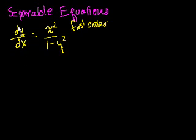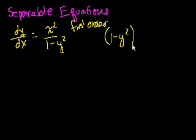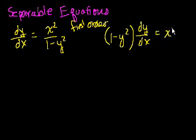At first you might say this looks linear — I'm not multiplying the derivative times anything else. But if you look carefully, you have a y squared, and y is a dependent variable, y is a function of x. So having y squared makes it non-linear. And even if this were just y, if you multiply both sides by 1 minus y squared, you'd be multiplying the dependent variable times its own derivative, which also makes it non-linear.